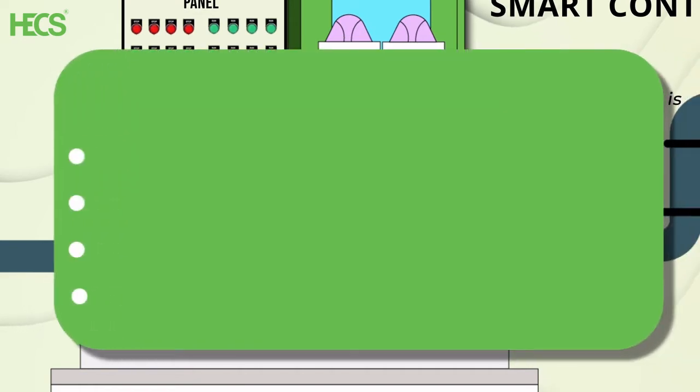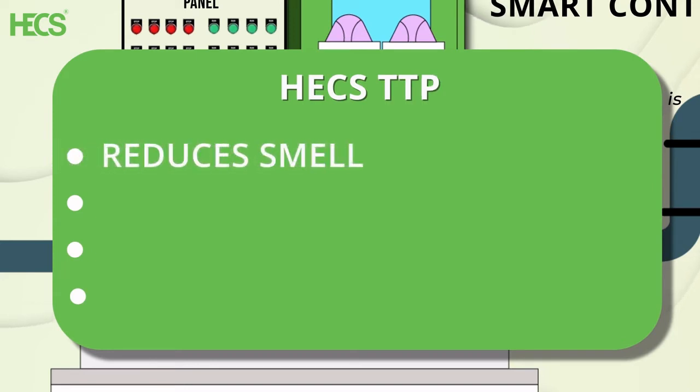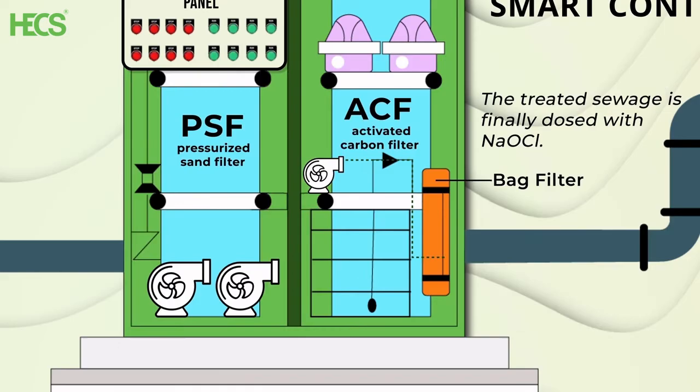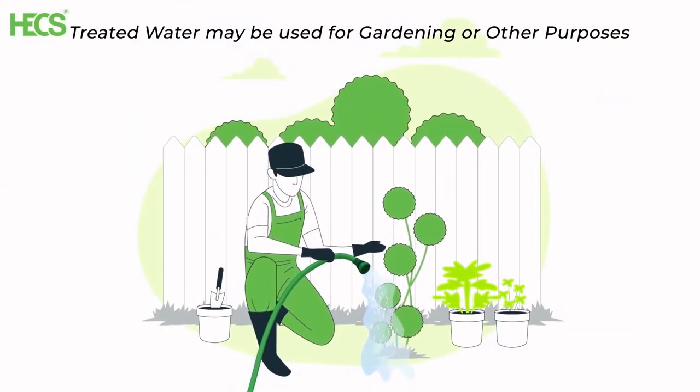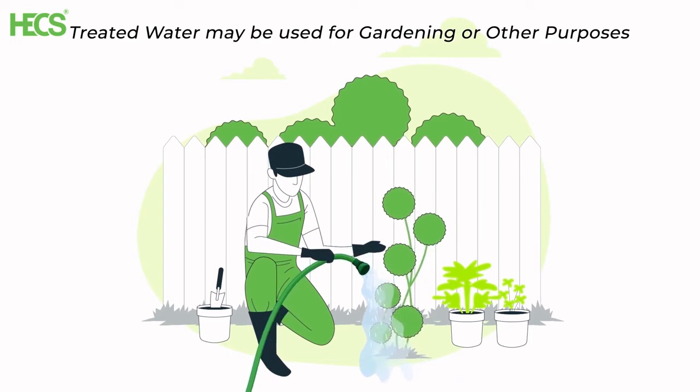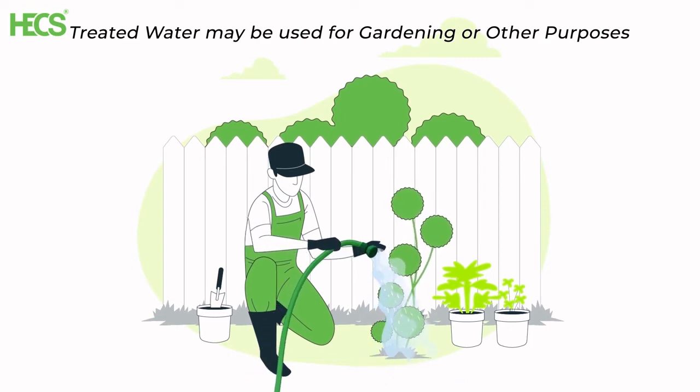The HEC's TTP helps reduce smell, TSS, turbidity and also disinfects the treated sewage. The treated sewage is finally stored for further usage. The outlet can be used for gardening or other purposes depending on the requirements at the site.